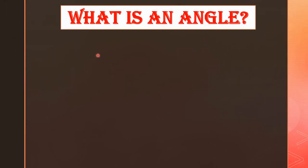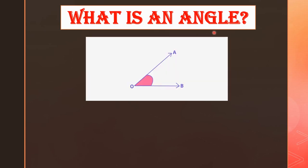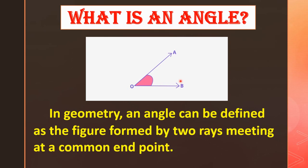Students, do you know what is an angle? In geometry, an angle can be defined as the figure formed by two rays meeting at a common end point. Here in this picture you can see two rays meeting at a common end point — that is what we call an angle.